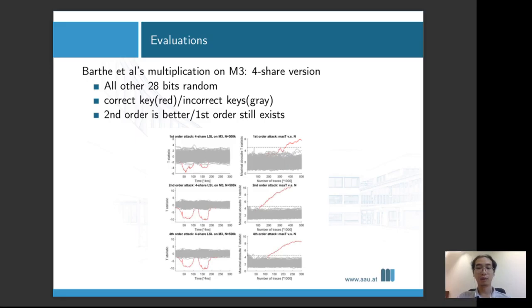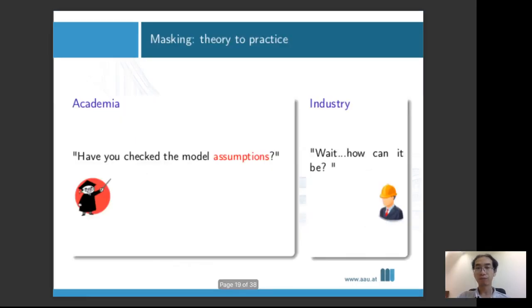But if we move on to the fourth share version, what we're going to see are two surprising points. The first one would be we still see some first order leakage, which is basically going against the order reduction theory. And the other thing is the second order attack is almost as efficient or even better than the fourth order attack, which means this might actually lead to some practical security flaw. Our industry engineer then asks, how can this be, where is it going wrong?